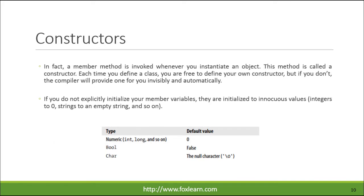A member method is invoked whenever you instantiate an object. This method is called a constructor. Each time you define a class, you are free to define your own constructor, but if you don't, the compiler will provide one for you invisibly and automatically.